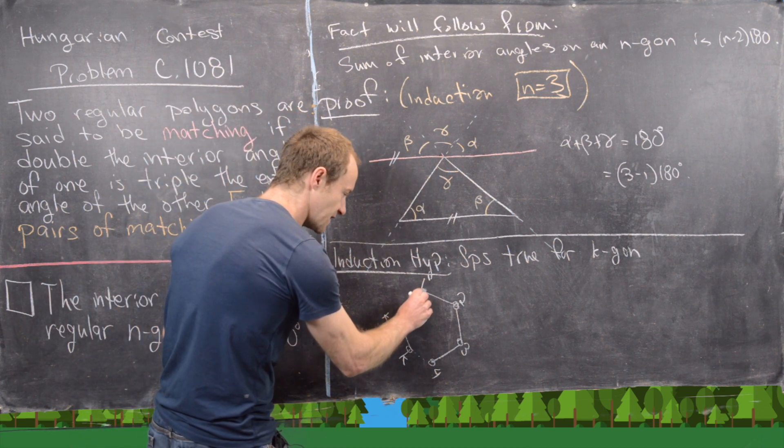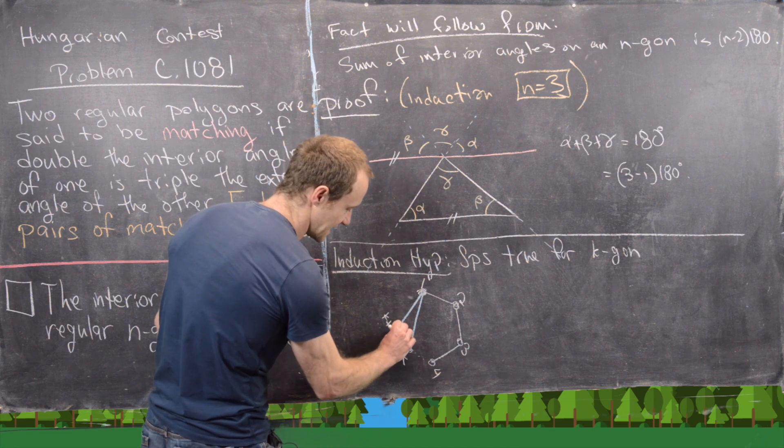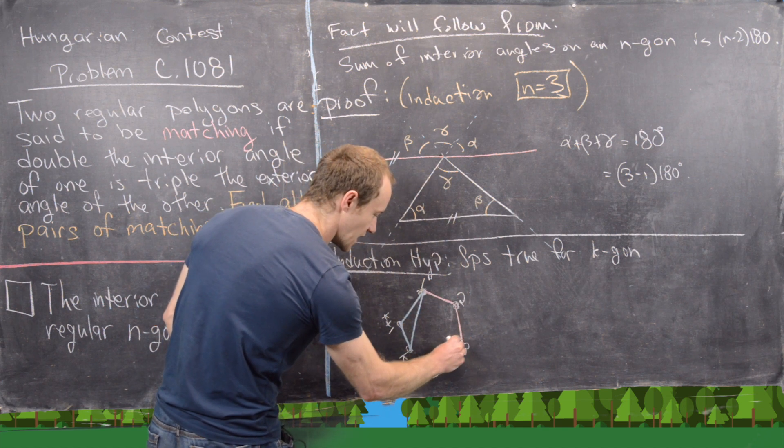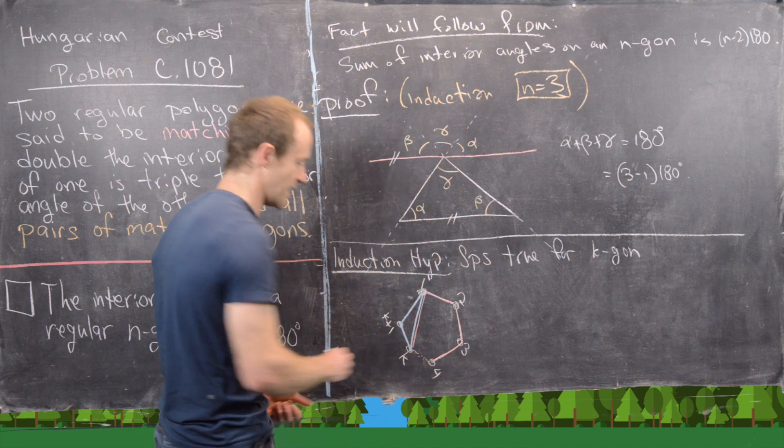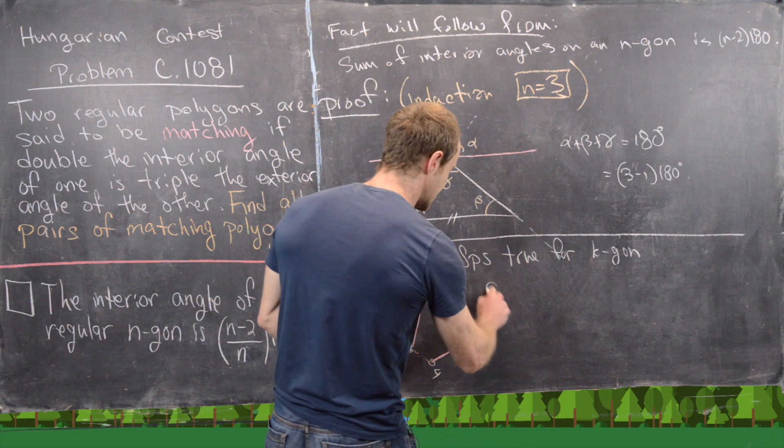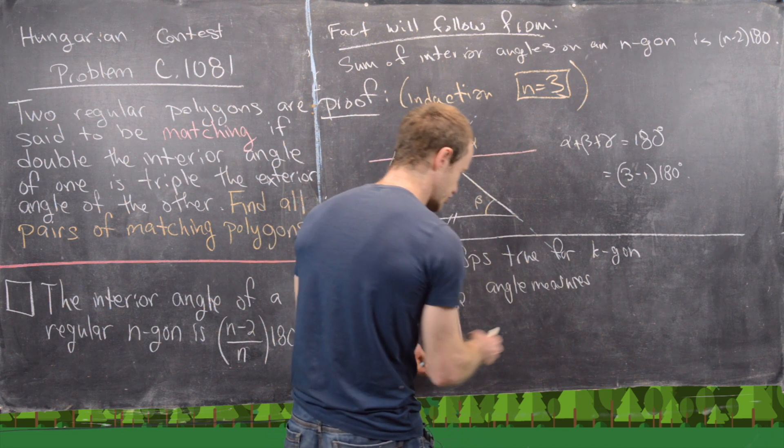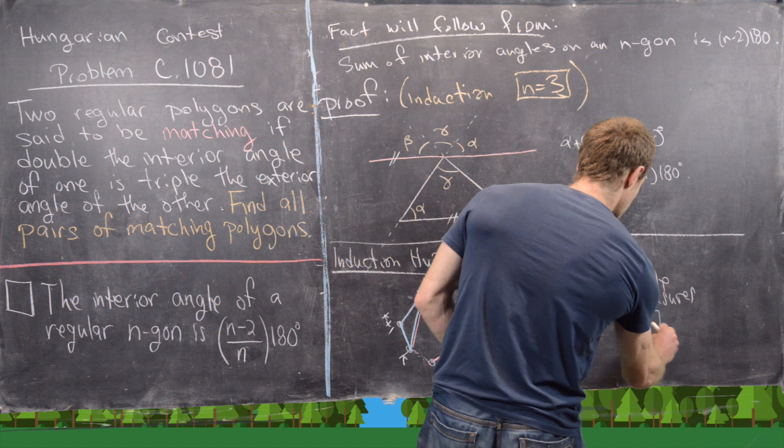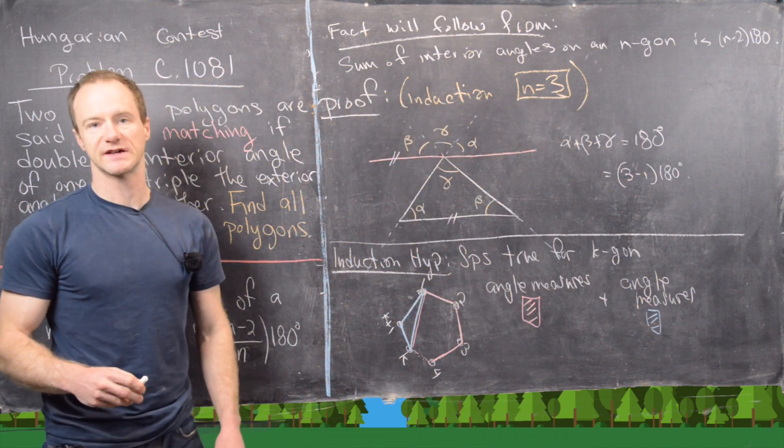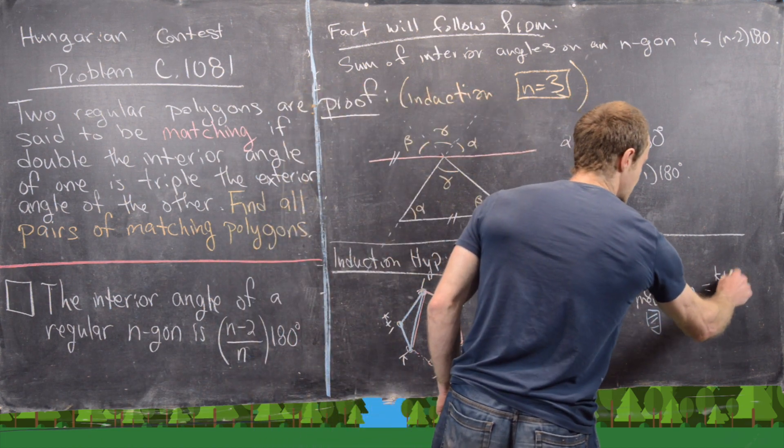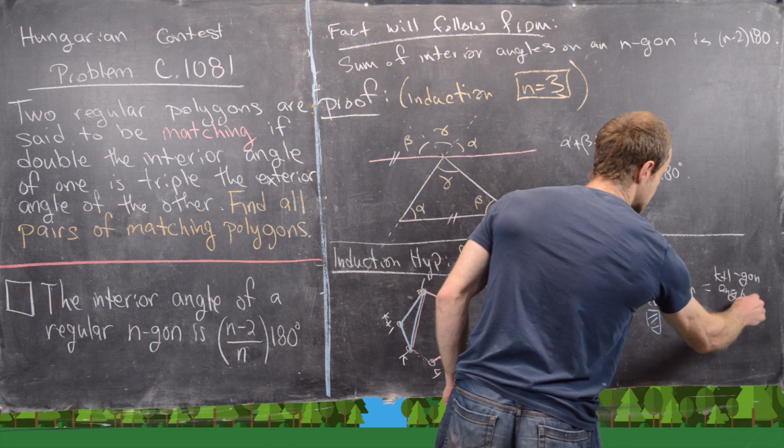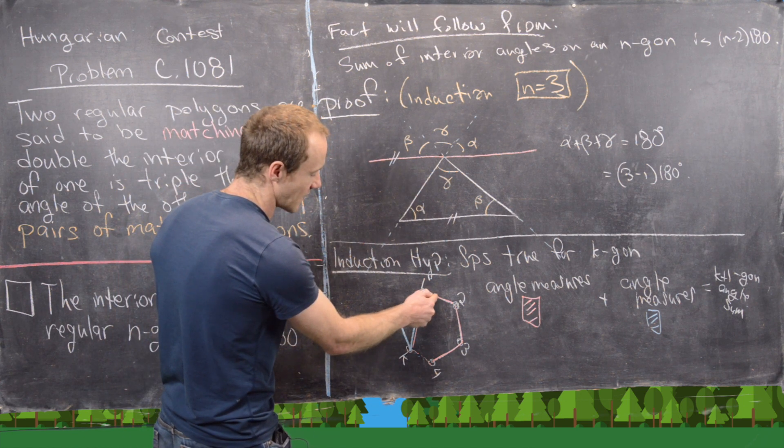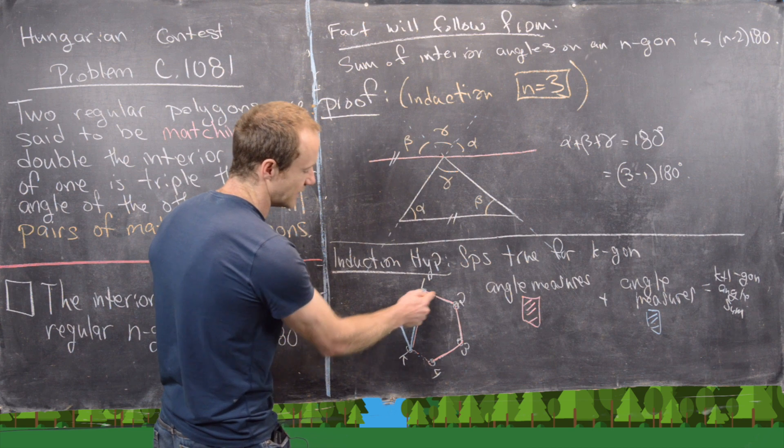Now what I want to do is triangulate this thing. In other words, we're going to take this triangle off of the k+1-gon, and that gives us this k-gon right here. And now we know that the angle measures in pink plus the angle measures in blue equal the angle measures of the whole k+1-gon. And that's obvious because the only thing that could go weird here is this angle right here, but this angle is the sum of the blue angle and the pink angle, so we're okay.